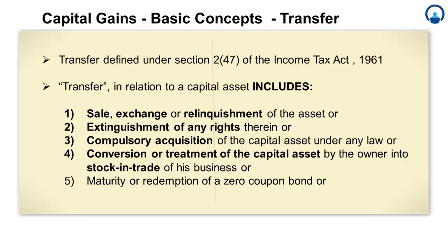That is, it would be sold even if Mr. A is not willing to sell it. So, if a capital asset is given to someone for a price, whether voluntarily or involuntarily, it is termed as sale and would hence be considered as transfer chargeable under the capital gains head of the Income Tax Act. The next term is exchange, which means an act of giving one thing and receiving another in return.